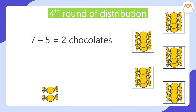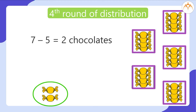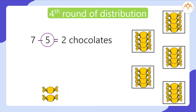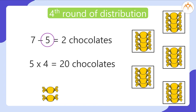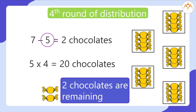As you can see, each of my friends got 4 chocolates and 2 chocolates are remaining. That means, while dividing 22 chocolates among 5 friends equally, there was repeated subtraction of 5 chocolates in each round of distribution. I required 4 such rounds in which I distributed 5 multiplied by 4 equal to 20 chocolates, and 2 chocolates are remaining. Now let us see how to do it on paper.